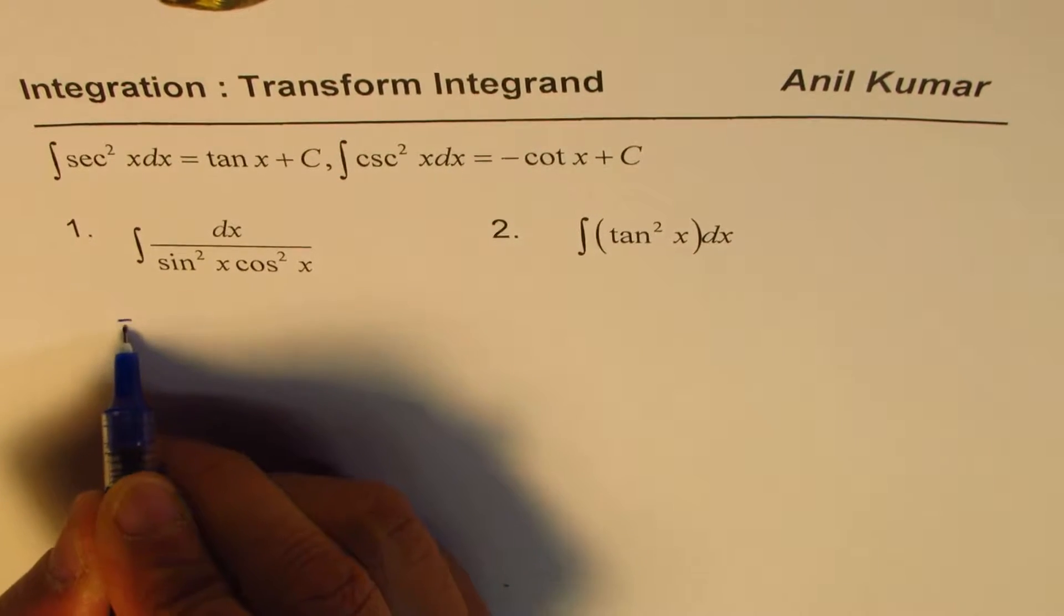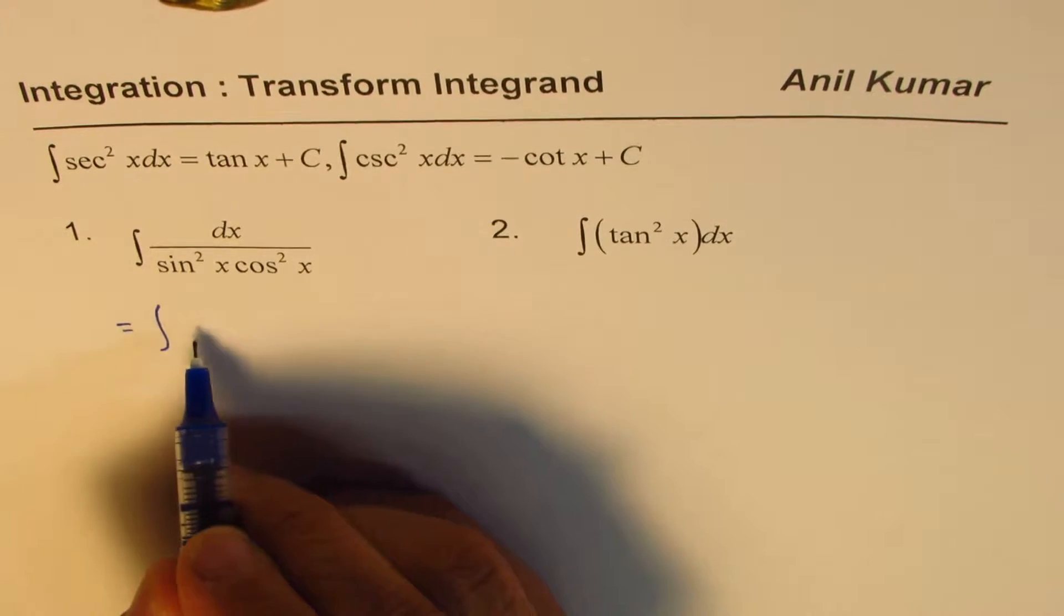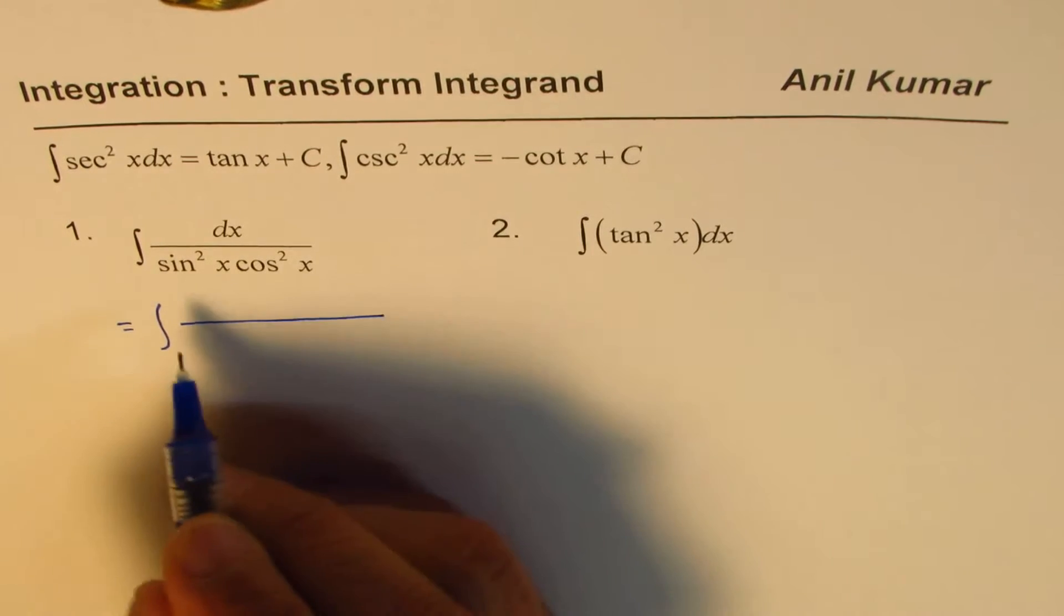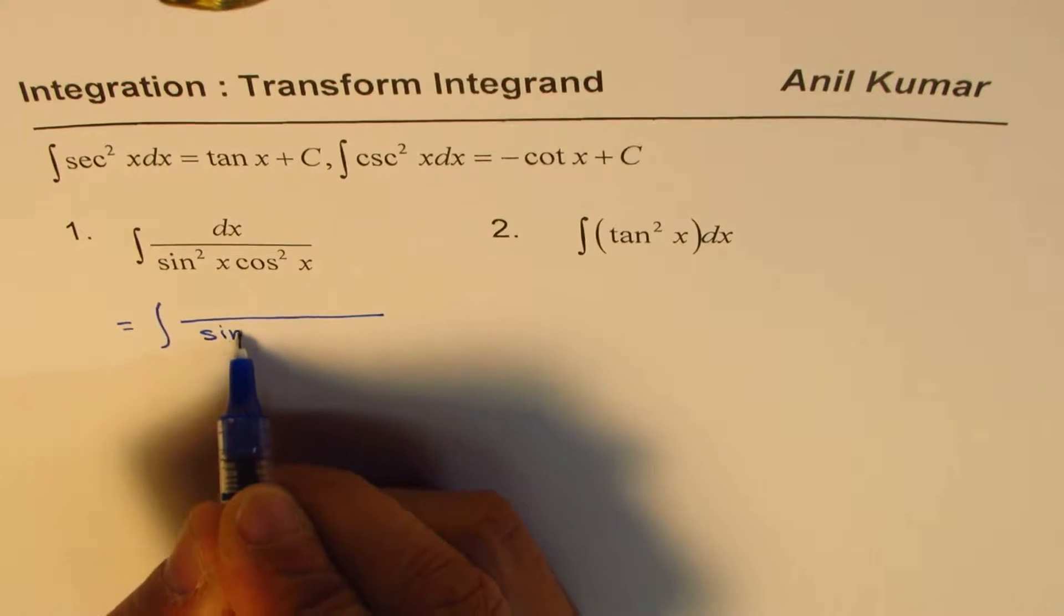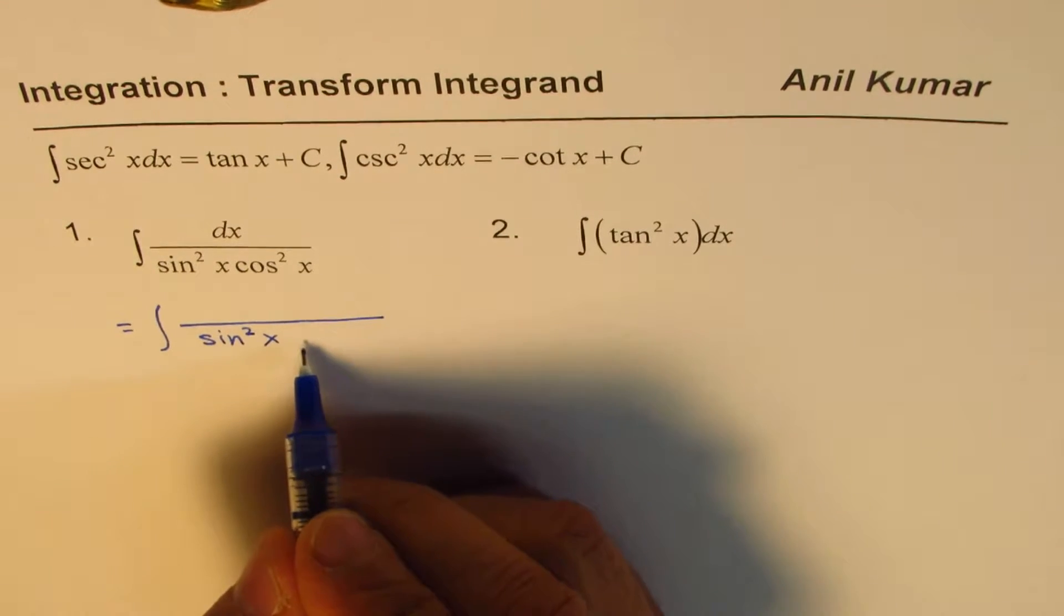So let's begin with the very first one. It is we have sin square x cos square x in the denominator. How do we simplify this? Think like this. We have one in the numerator.